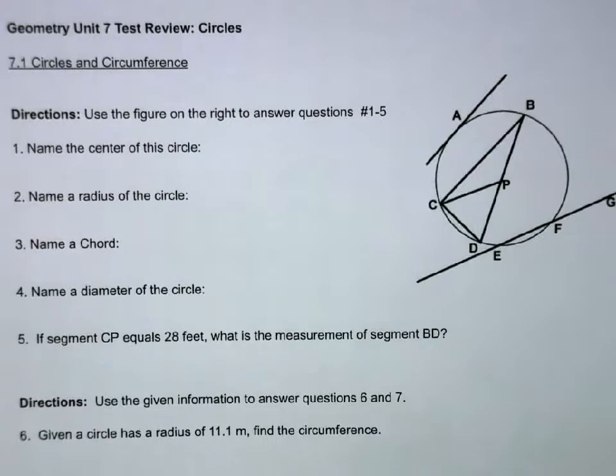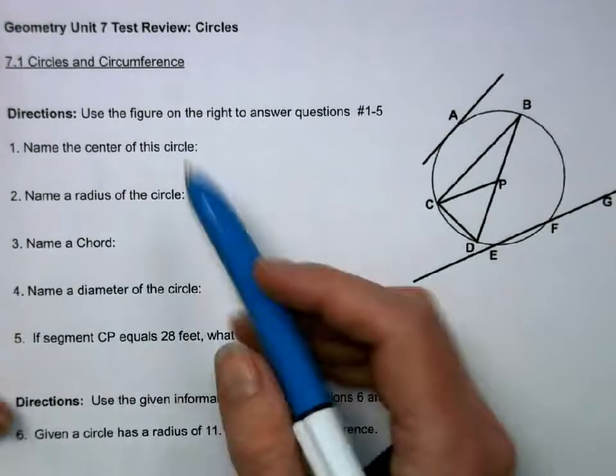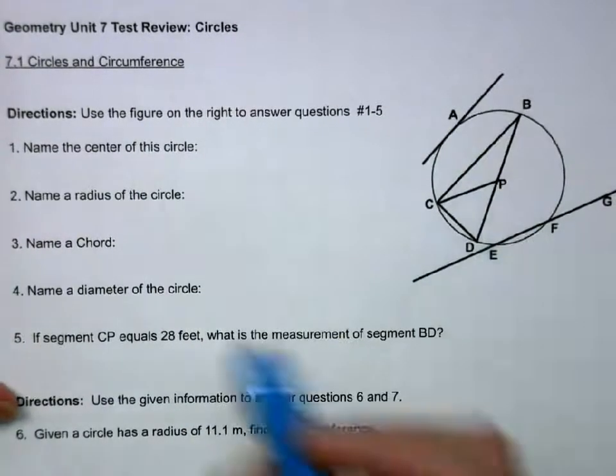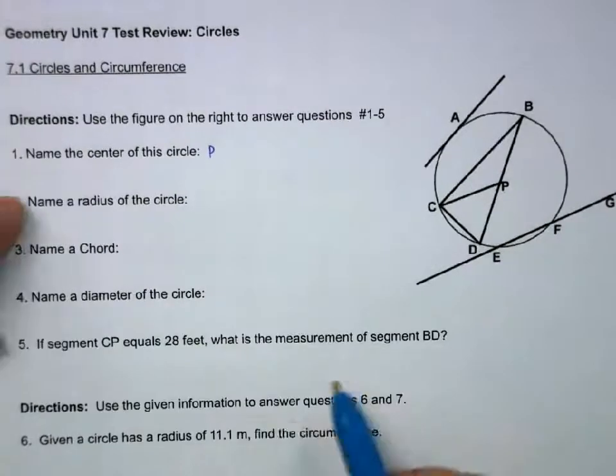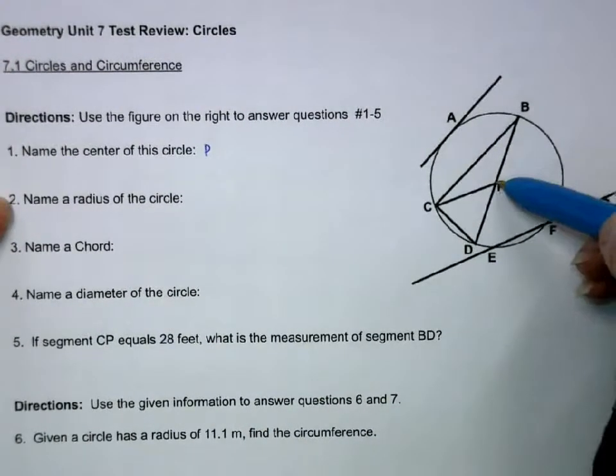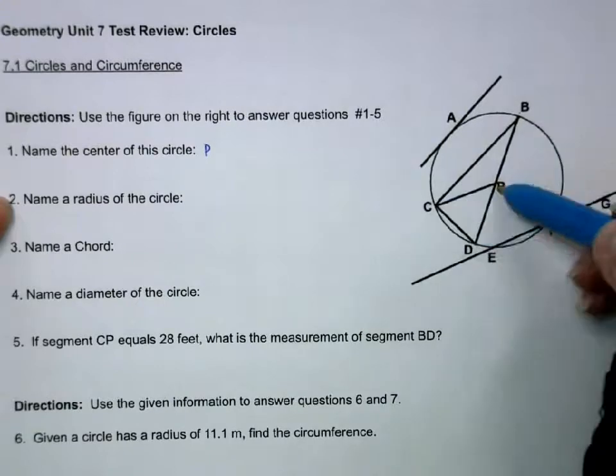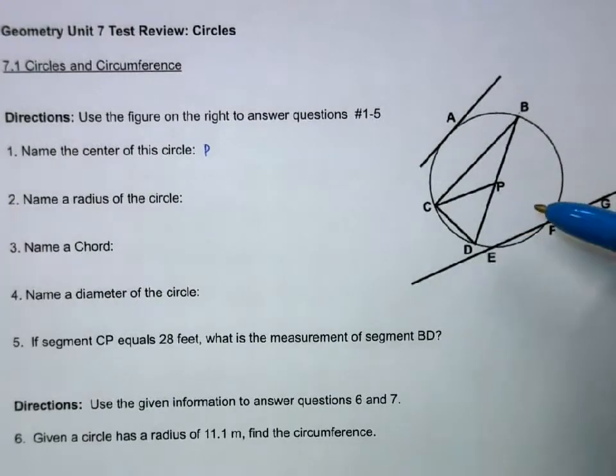So the first section, we talked a lot about vocabulary. The center of the circle is going to be P. The radius goes from the center to the edge. So really, I have three options: we have PB, PC, or PD. Any of those would work.